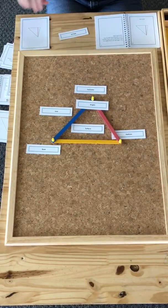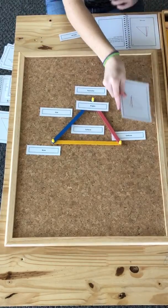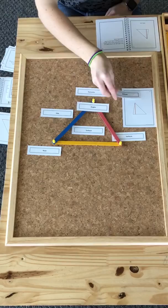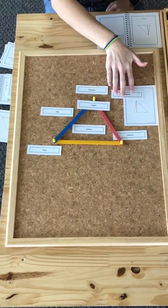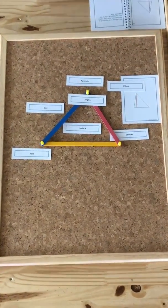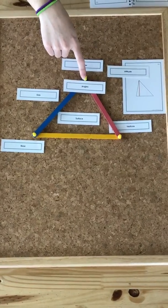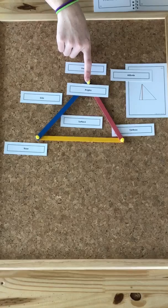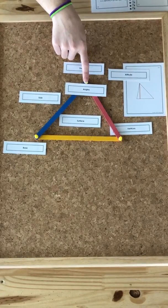And lastly, we have the altitude or the height. The altitude of a triangle is a line segment from any vertex and is perpendicular to the opposite side.